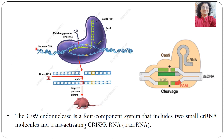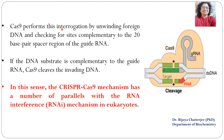The molecular scissors will go and look for the target gene and cleave it, leading to inactivation of the target molecule. This Cas9 endonuclease is basically a four-component system that includes crRNA and trans-activating RNA. Cas9 performs this interrogation by unwinding foreign DNA and checking for complementarity to the 20 base pair spacer region of the guide RNA.